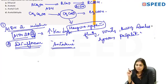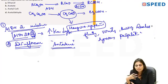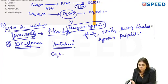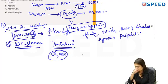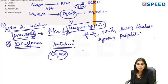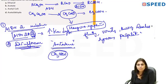Disulfiram (Antabuse) is given in alcohol dependency programs alongside psychiatric treatment and psychological counseling. If the person consumes alcohol while taking disulfiram, acetaldehyde accumulates, causing flushing, hypotension, tachycardia, profuse vomiting, and in severe cases arrhythmias and even death, though that is rare. This is the mechanism by which disulfiram is used in alcohol dependency programs.